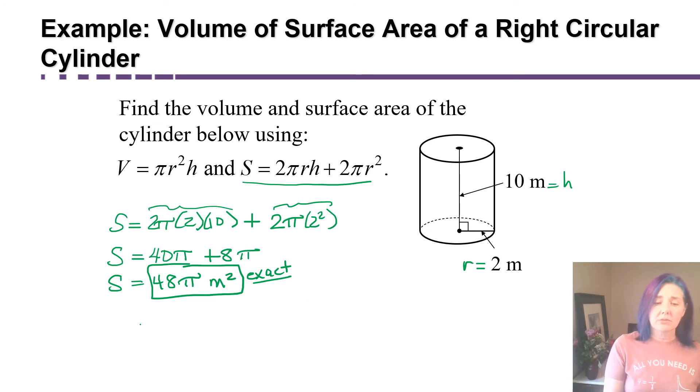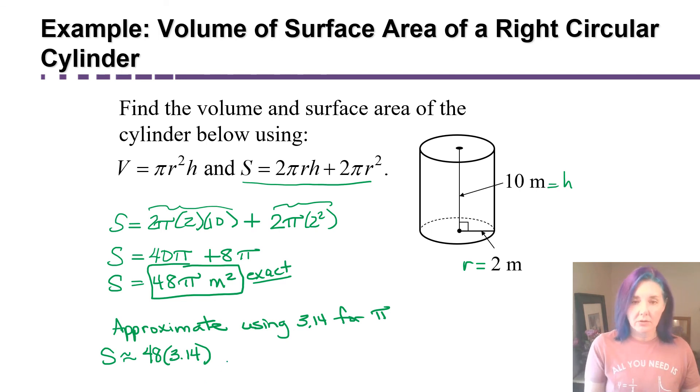So how do we get the approximate solution? So if I ask you to approximate using 3.14 for pi, you're going to type that into your calculator. So 48 times 3.14 would be the approximate value, not the exact value, of the surface area. So on my calculator, I got 150.72, and that's still going to be in square meters. I hope you found this video helpful.